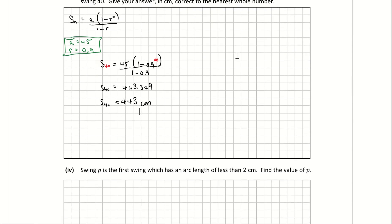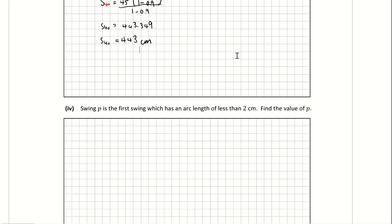Part 4: swing P is the first swing with an arc length of less than 2 centimeters. Each time we multiply by 0.9, which swing will give an arc length of just less than 2 cm? Writing that mathematically: the formula for term N is 45 times 0.9 to the power of N minus 1, and we're looking for it to be less than 2 centimeters — not equal to, less than.